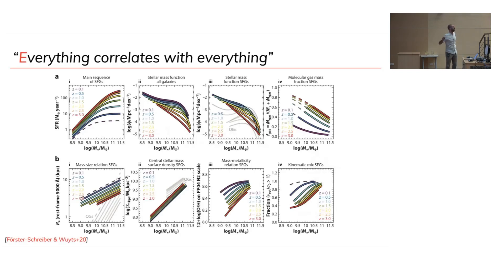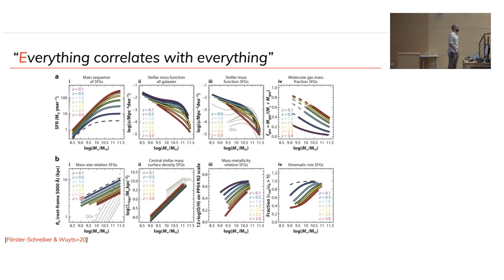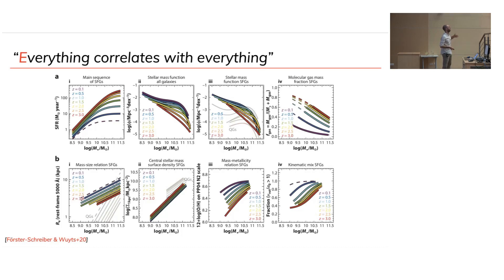Everything correlates with everything — that's a sentence I hear every time I present something about the main sequence or quenching at any conference. This is just a small subset of scaling relations. On the left, the main sequence of star-forming galaxies: stellar mass versus star formation rate. Then the stellar mass function — how galaxies are distributed as a function of mass — divided into quiescent red objects and star-forming objects. Gas fraction: how much cold gas galaxies have as a function of stellar mass. Mass-size relation. So everything correlates — how can we make sense of this?